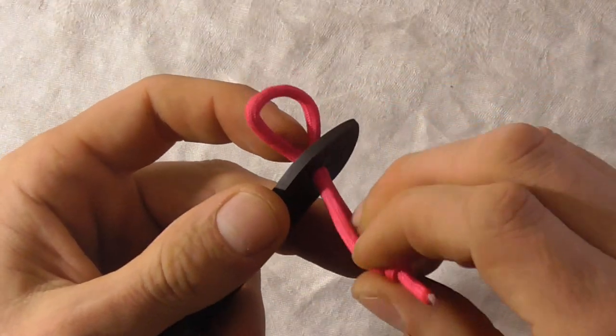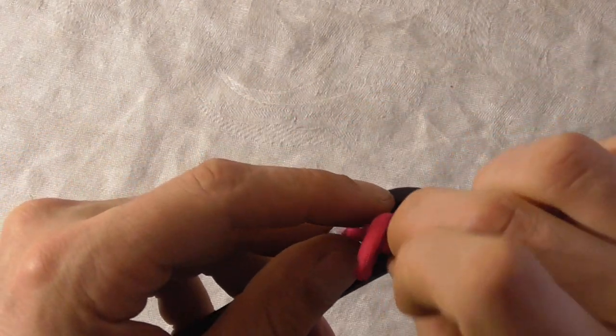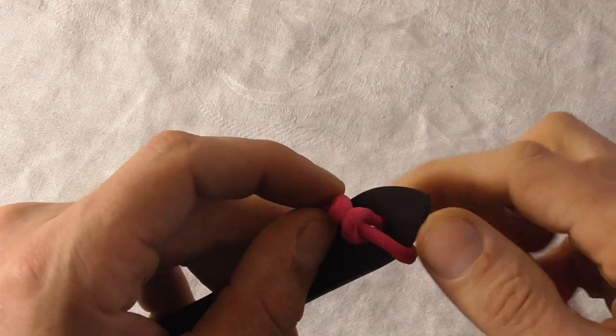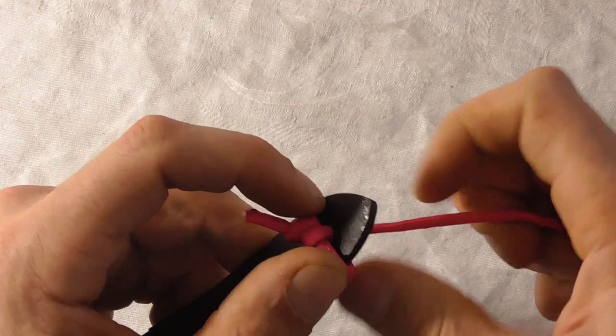And now all I want to do is pass this stopper knot through that loop and then tighten the loop down behind that stopper knot.